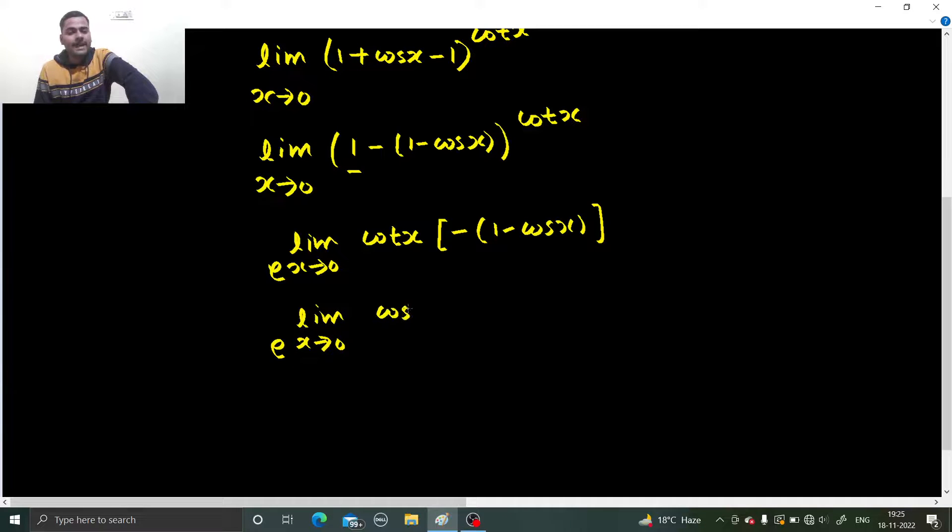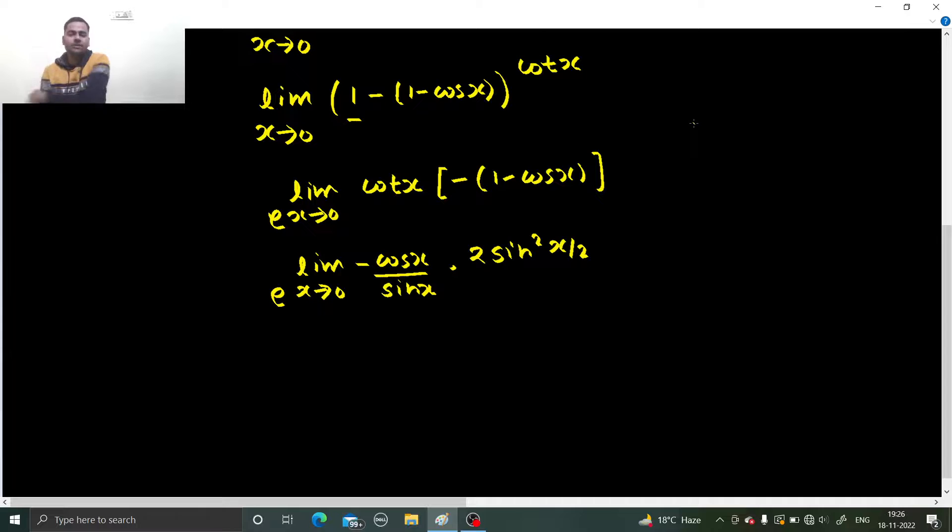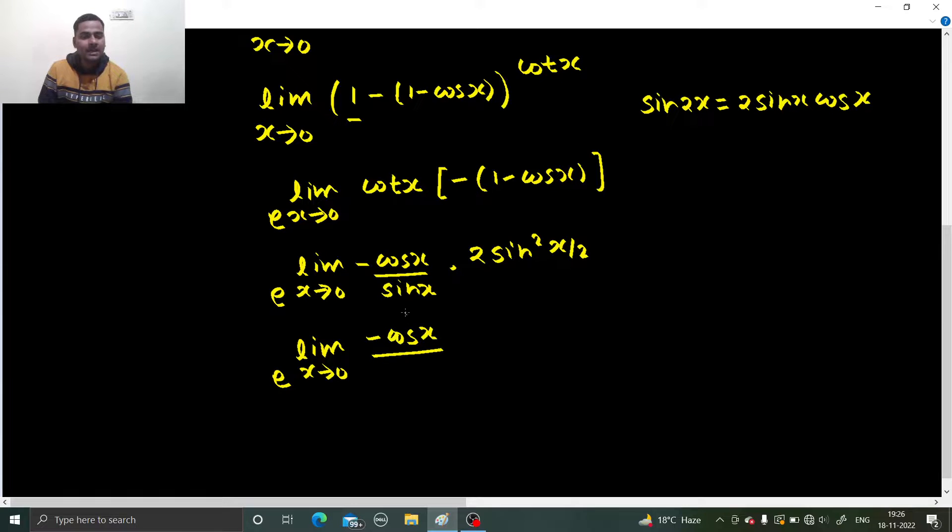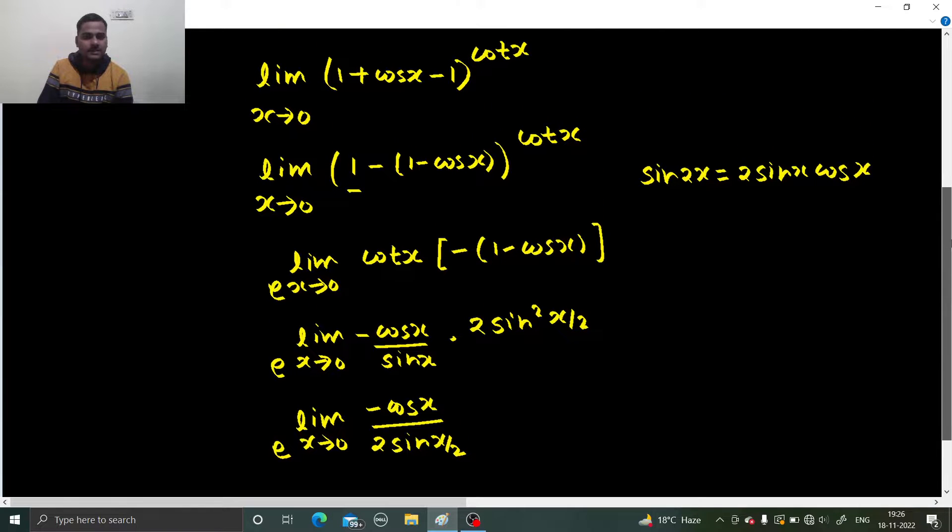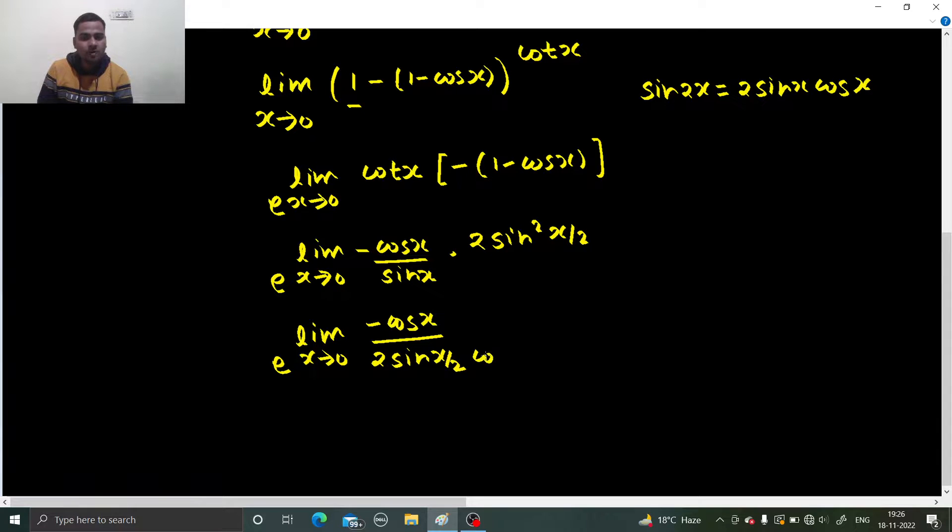In the denominator, cot x is cos x by sin x. So e power limit x tending to 0, let this cos x remain as it is. In denominator this sin x can be written as 2 sin x by 2 cos x by 2.